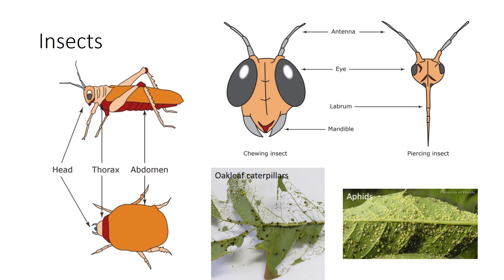Insects can be classified in two different ways. The first way is based on the feeding habits of the insect. Chewing insects use mandibles for chewing plant parts such as leaves, stems, roots, fruits, flowers, and petals.